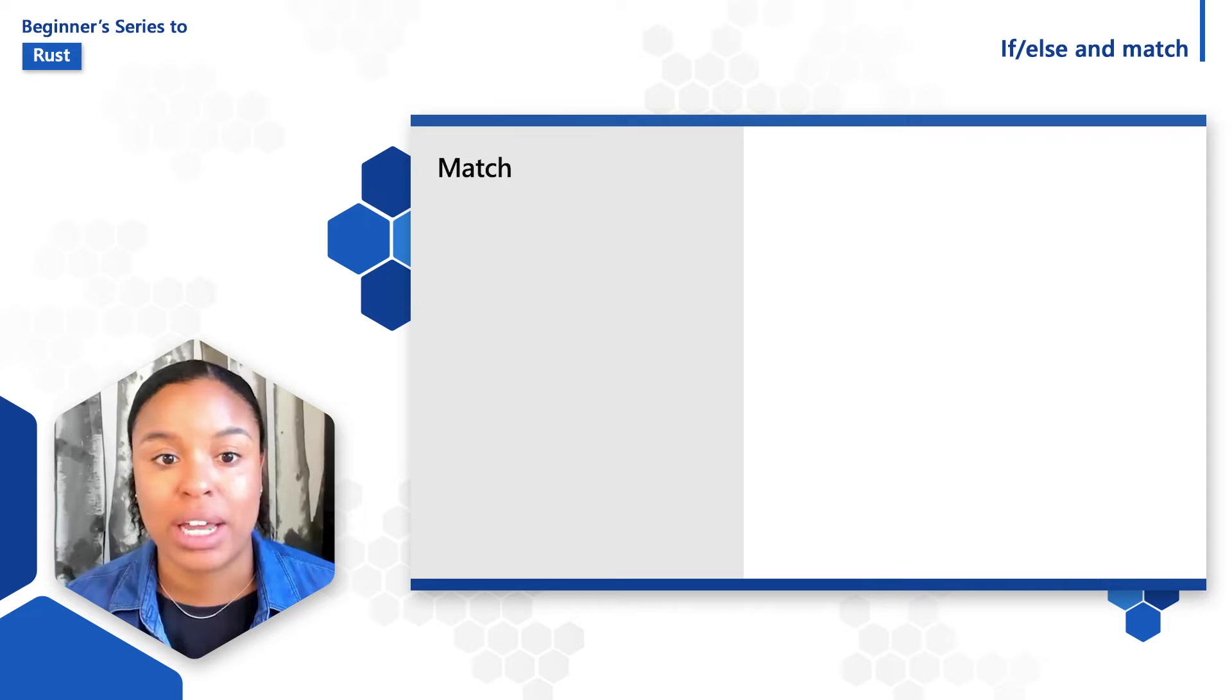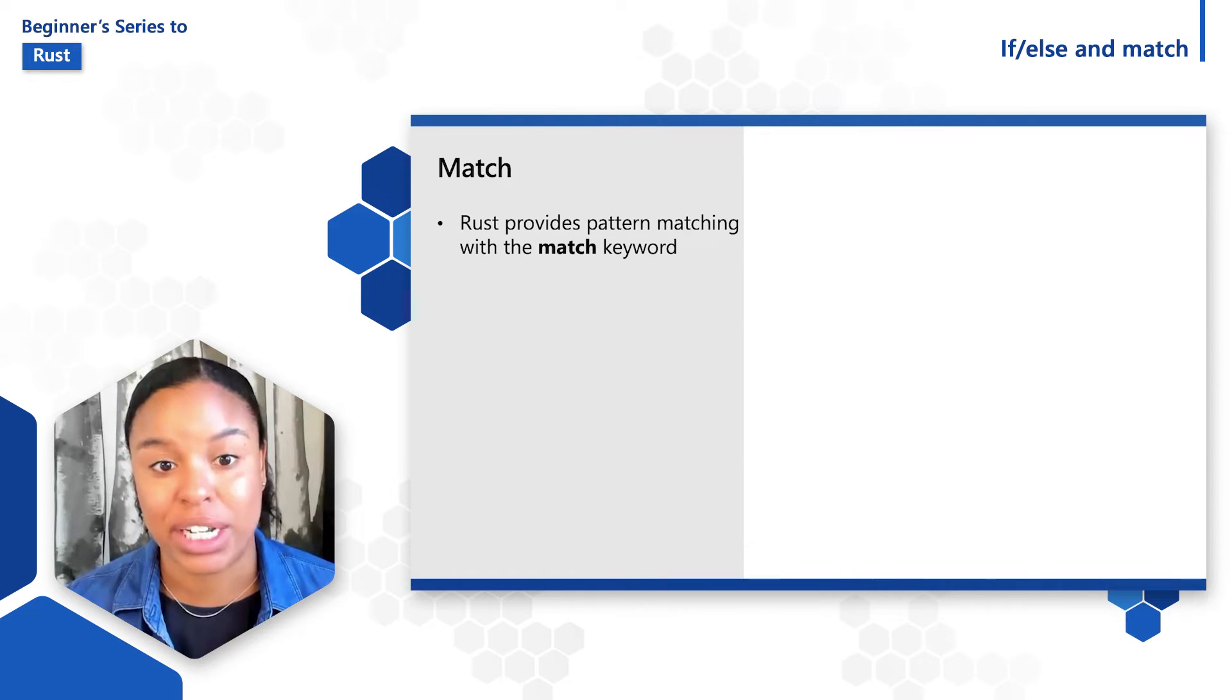Another option that is used regularly in programs to make decisions by comparison is the match expression. This is similar to a switch in other languages like C. Rust is able to provide this pattern matching with the match keyword.